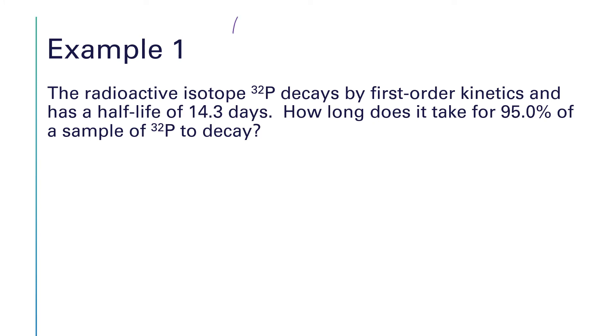So what we know is that at t equals zero, the concentration of this isotope is equal to 100%. What we're asked to find is the time at which the concentration has decreased by 95%. Well, if it's decreased by 95%, we have 5% left. So we're trying to find time when the concentration is down to 5%.